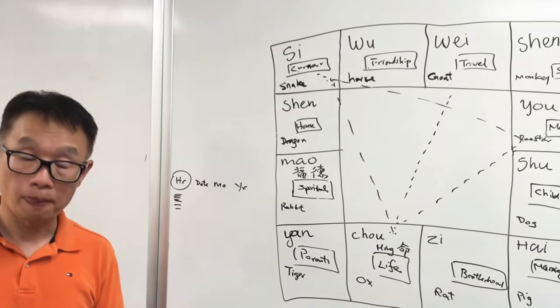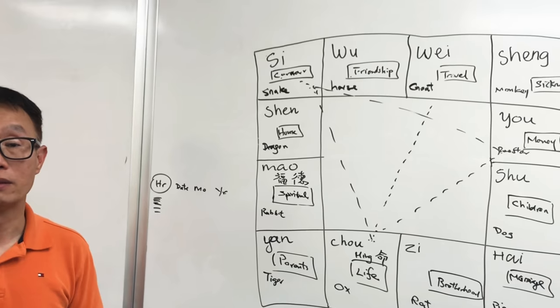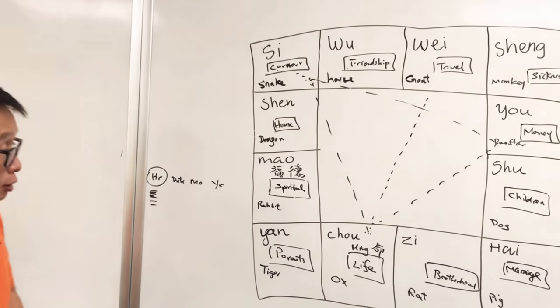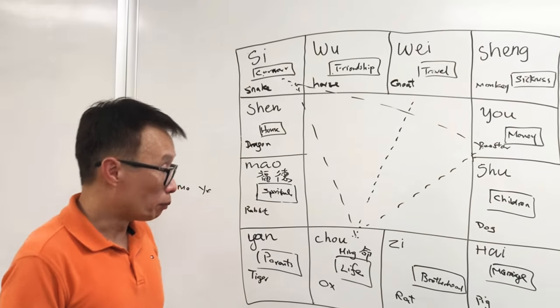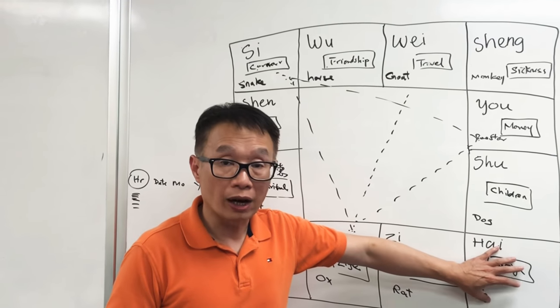Is there another triangle that you look at too, or just the main one is the life, money, and career? So whoever you are trying to look at, suppose I want to look at my marriage or spouse, then you will look at the triangle affecting the spouse.